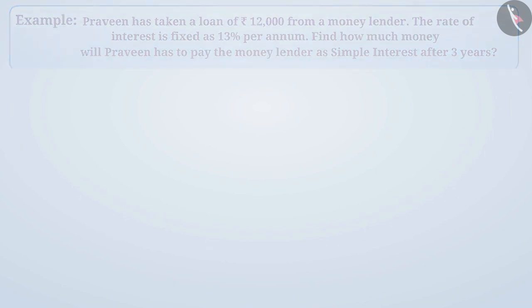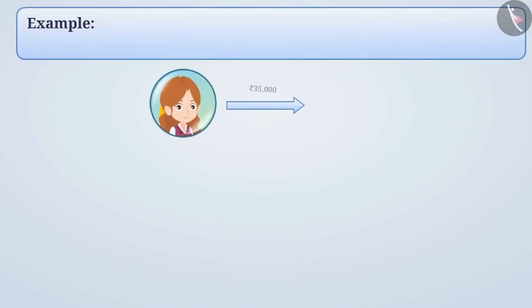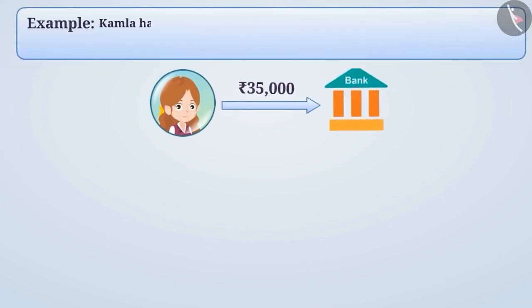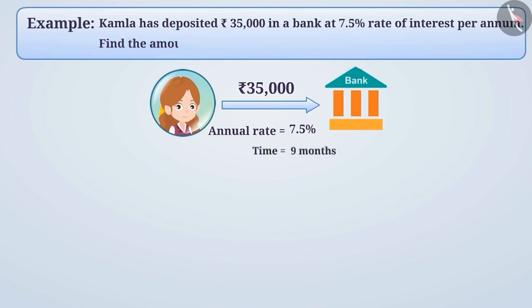Next example: Kamala has deposited Rs 35,000 in a bank at 7.5% rate of interest per annum. Find the amount she will get after 9 months.